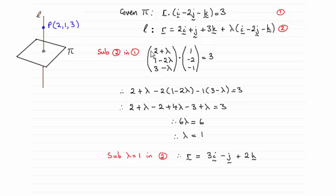So as you can see, I've substituted r into this one here, written it out as column vectors, and then all I need to do is dot these two column vectors together.